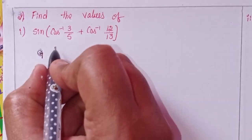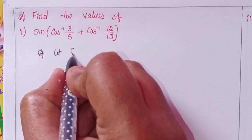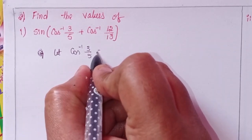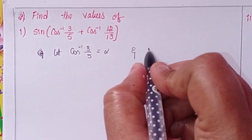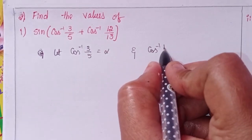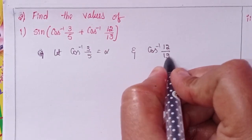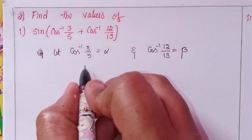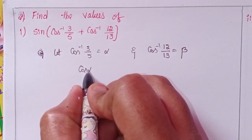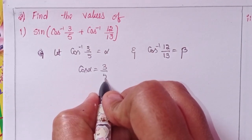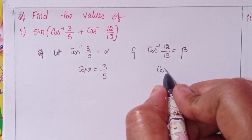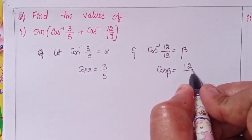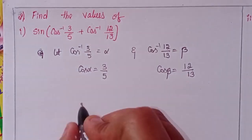Let us consider cos inverse 3 by 5 equal to alpha, and cos inverse 12 by 13 equal to beta. That means cos alpha equal to 3 by 5, and cos beta equal to 12 by 13.